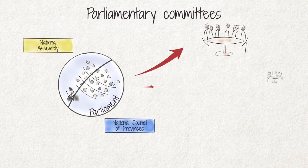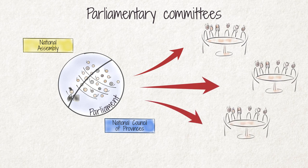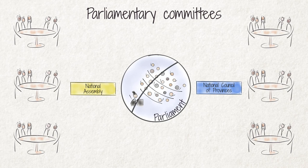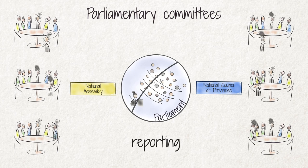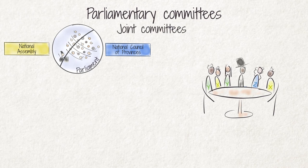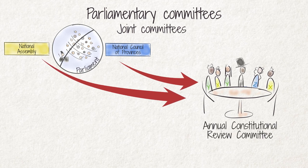Parliamentary work is done in a number of different committees, consisting of smaller groups of members. Committees enable members of parliament to develop expertise and in-depth knowledge of the specific committee's area of responsibility, for example health, education, or foreign policy. Each house has its own committees. Committees are, in general, proportionally representative of the parties in parliament and headed by a chairperson. They are required to report regularly on their activities and to make recommendations to their house for debate and decision. There are also a number of joint committees of the National Assembly and the National Council of Provinces, for example the Annual Constitutional Review Committee. Committee meetings are generally open to the public.